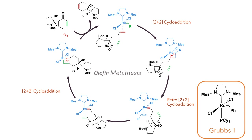The newly formed alkene is displaced by the other olefin present on the molecule, and yet another 2+2 cycloaddition occurs. This four-membered metallacycle undergoes a retro-2+2 cycloreversion, and the target cyclohexanone is produced, leaving a methylene group present on the catalyst, which can then go on to react further as the catalytic cycle begins again. Overall, the reaction causes the loss of ethylene from the substrate and the formation of a new ring.